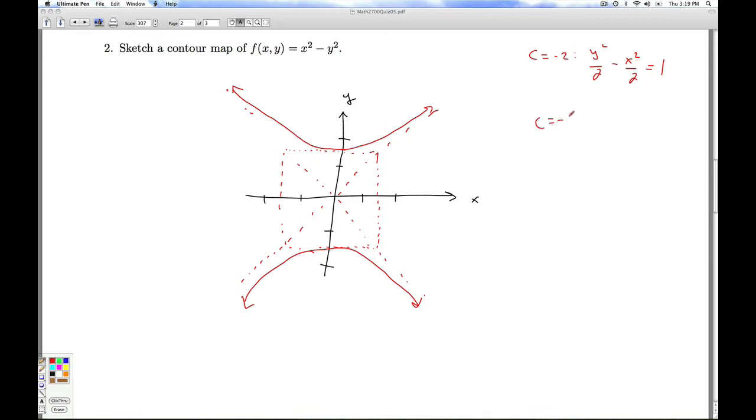Now for c equals negative 1, I just have a smaller guiding square. So I'm going to dot that in. I still am going to have the same asymptotes. So it's going to come in like this. Like that. And here. The question you can ask yourself is, are these things going to actually overlap? Are they going to cross each other? I'll let you decide that.